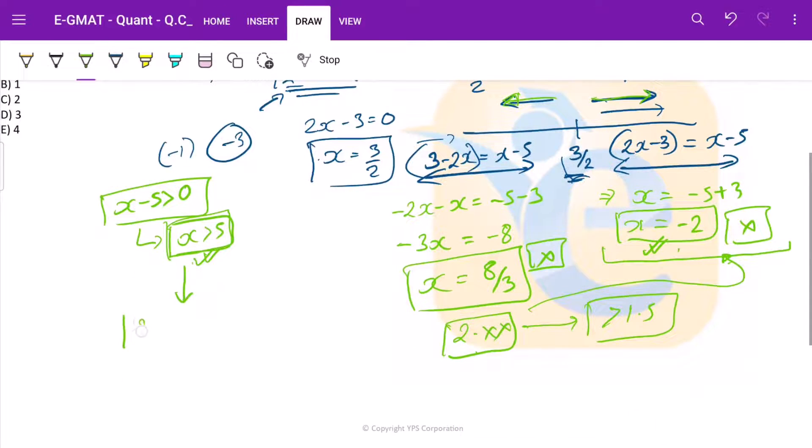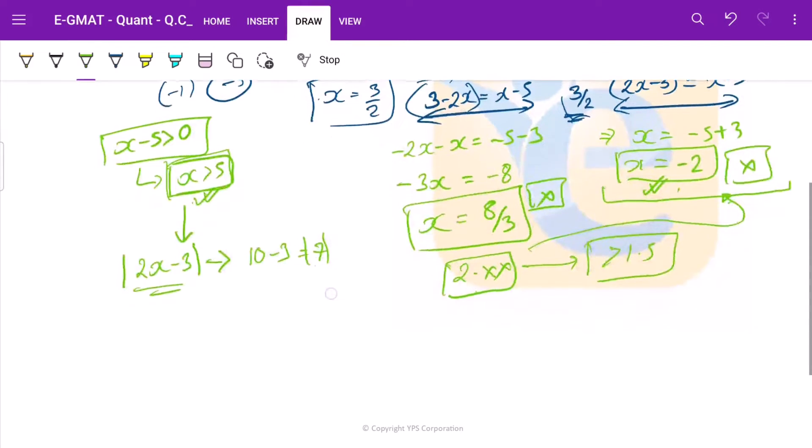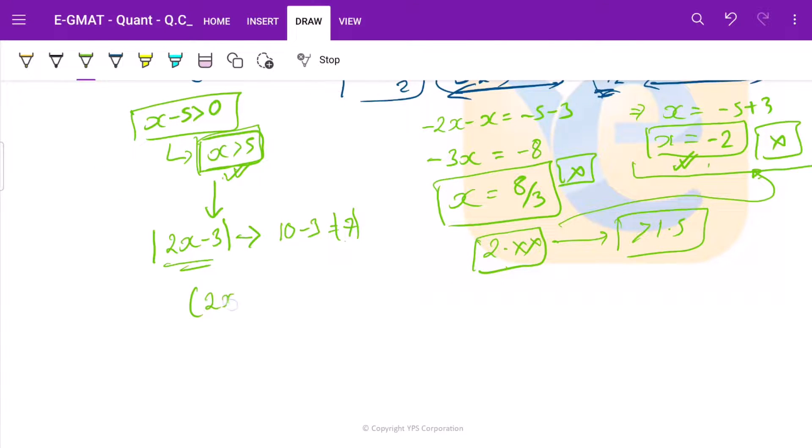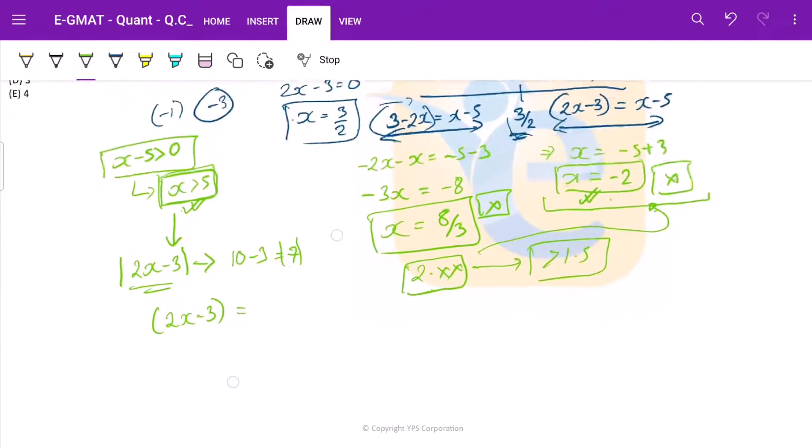Thus this mod |2x - 3| would also become positive. This would become 10 - 3, that is 7. So this is positive. So we can open this mod as a positive number. So 2x - 3 = x - 5.